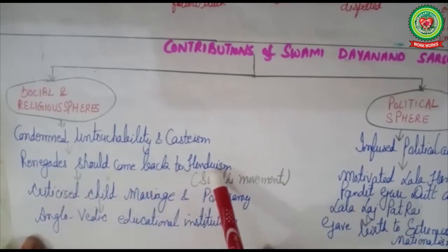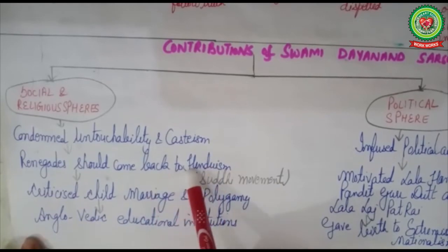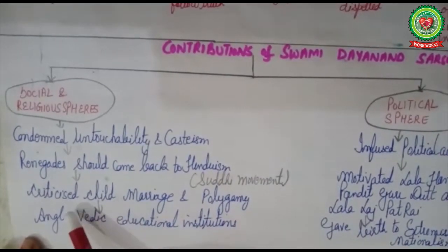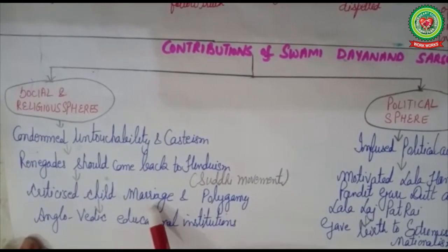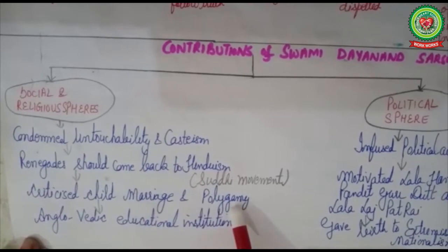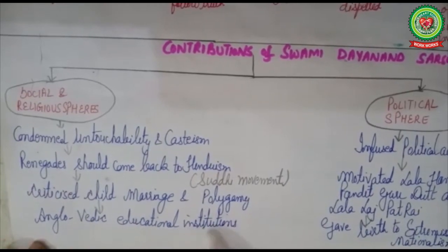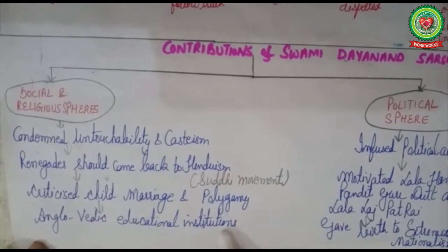He was of the view that renegades should come back to Hinduism — those who had deserted Hinduism and adopted Christianity or other religions — and for this he started the Shuddhi movement. He criticized child marriage and polygamy, believing a person should not have more than one wife. He also set up Anglo-Vedic educational institutions; today all DAV schools and colleges are the product of Arya Samaj.